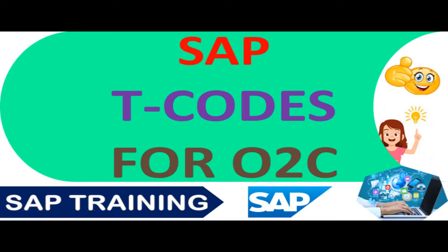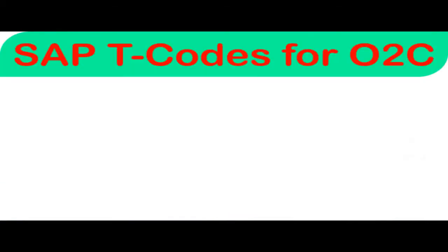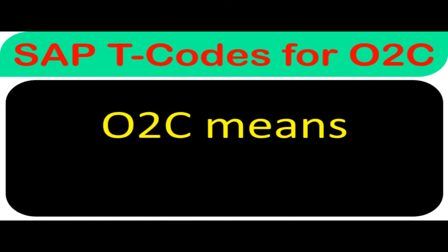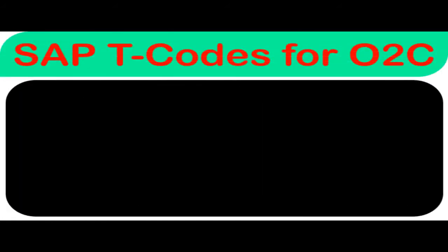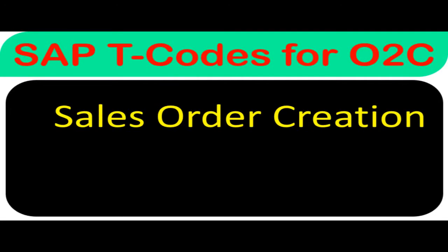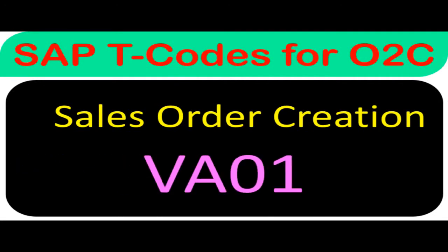Welcome to the virtual office training. Today we will learn SAP T-codes for O2C. O2C means Order to Cash. If you want to create a sales order, you can use T-code VA01.